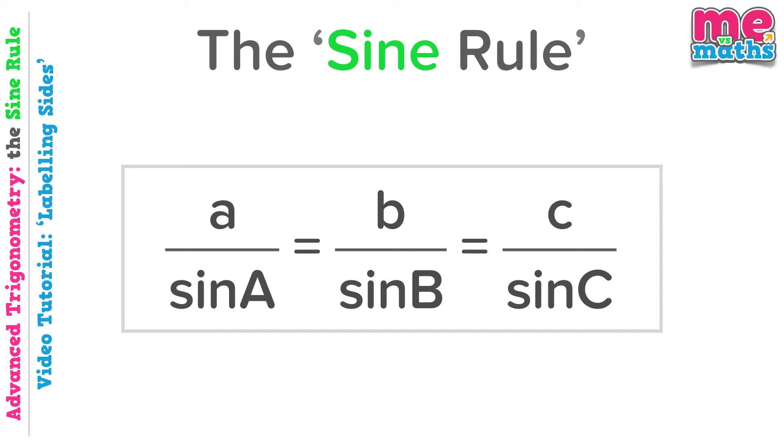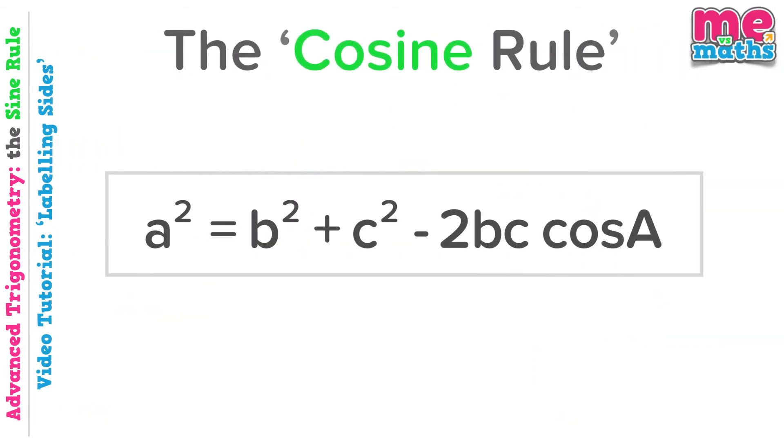So instead of the hypotenuse etc, we have a series of lowercase letters and a series of uppercase letters instead. And if we take a quick look at the cosine rule, we find a similar set of letters, some lowercase and in this case just the one capital letter.